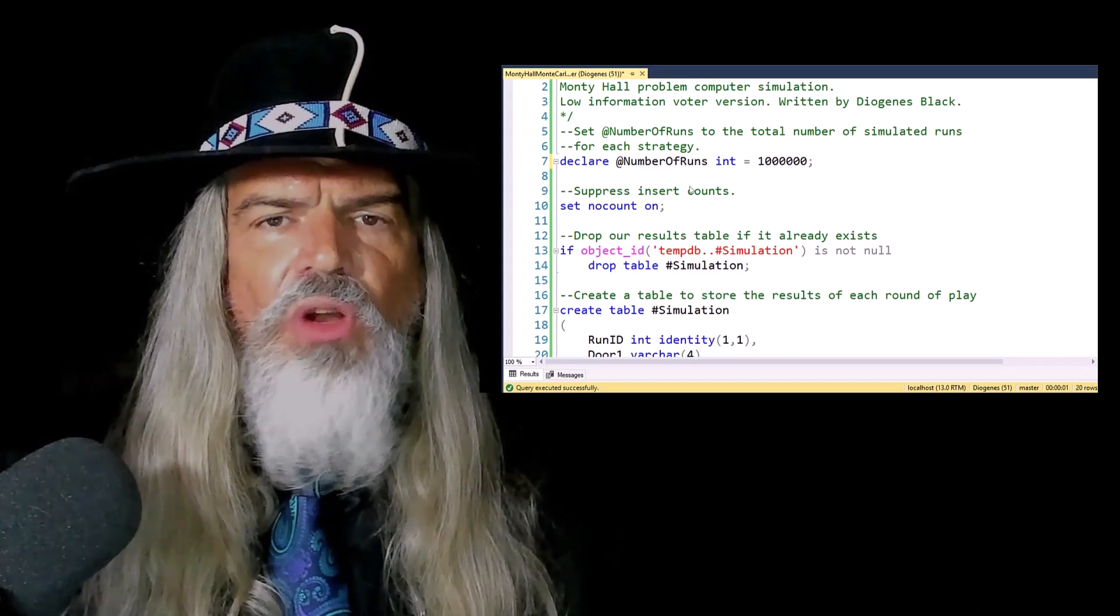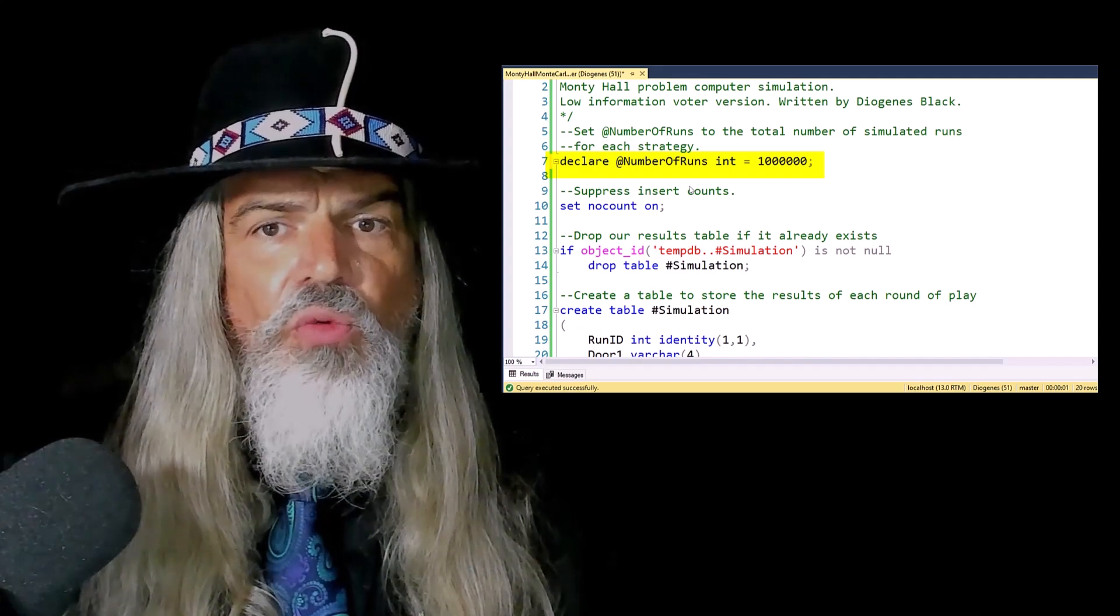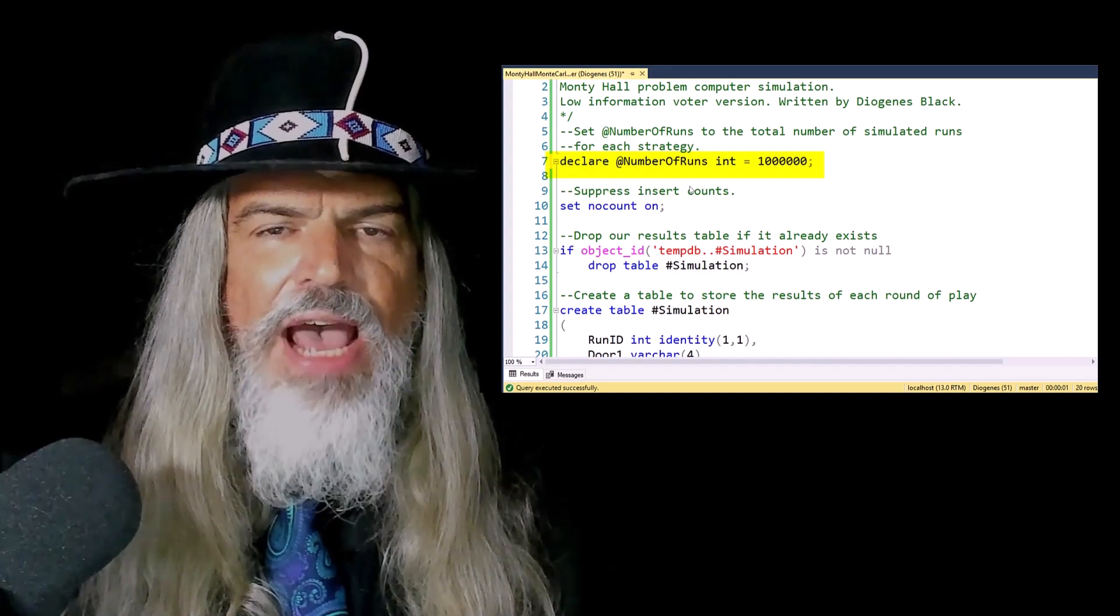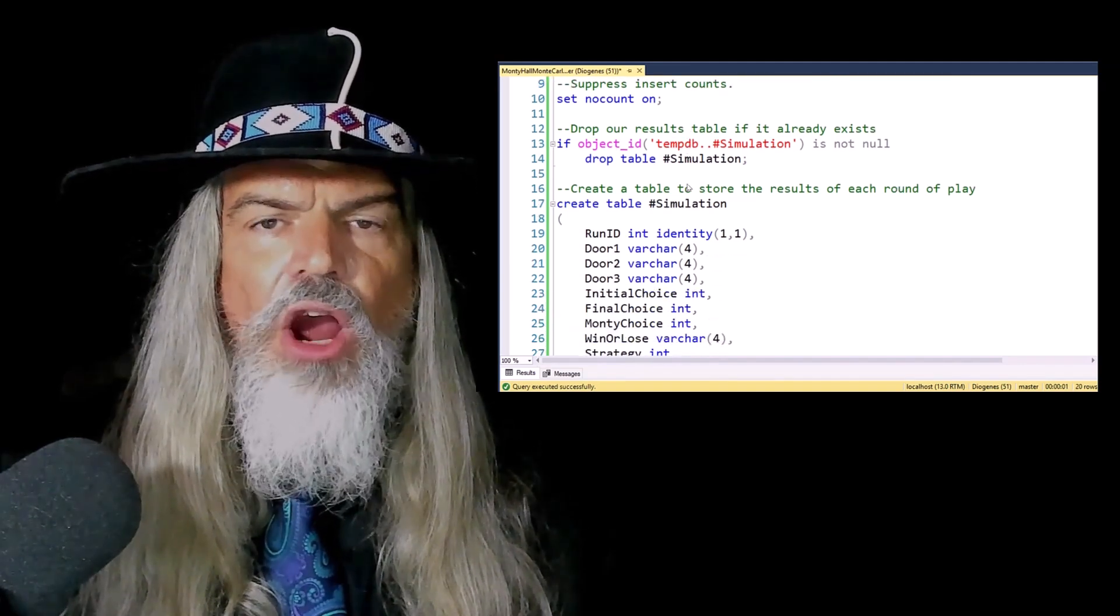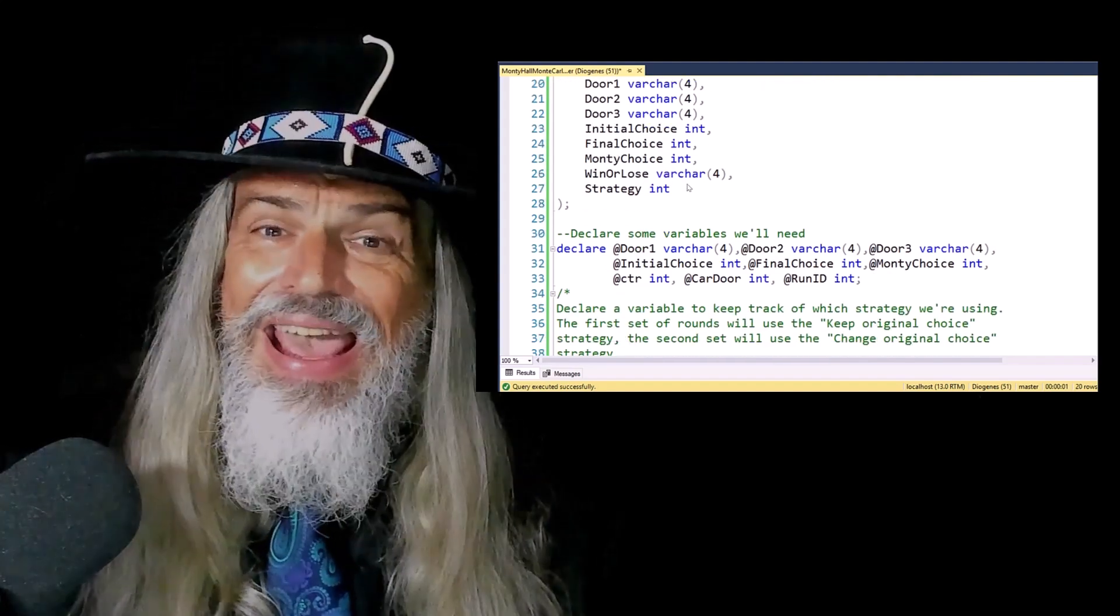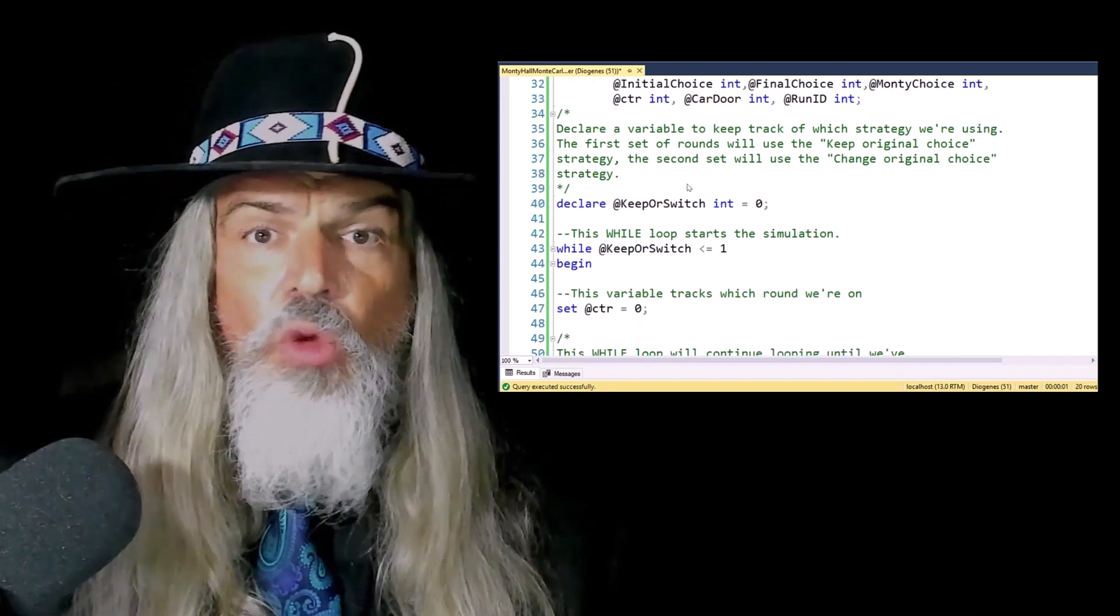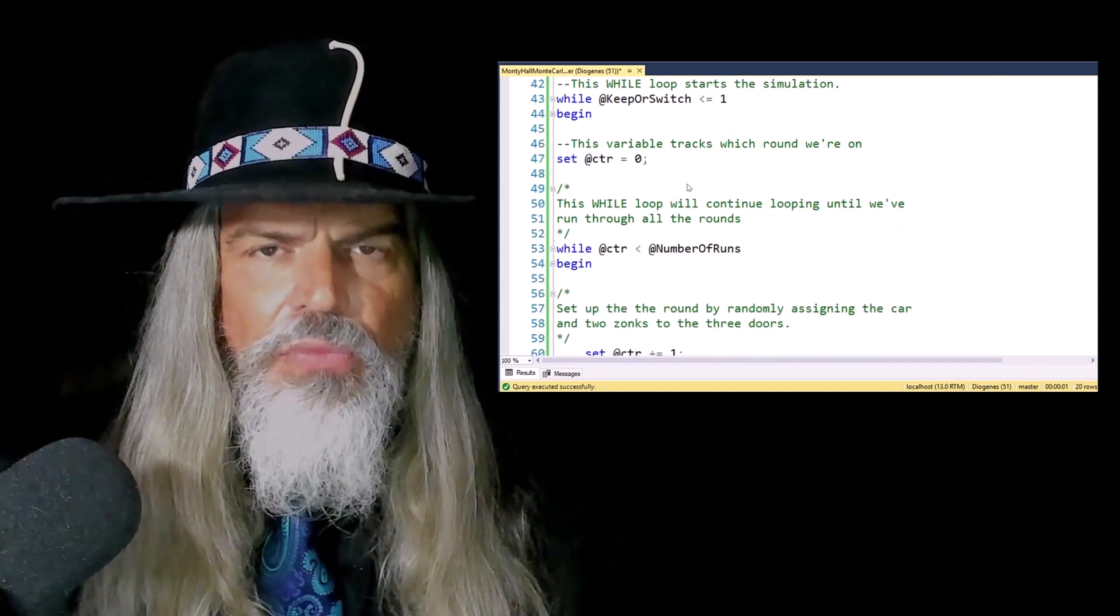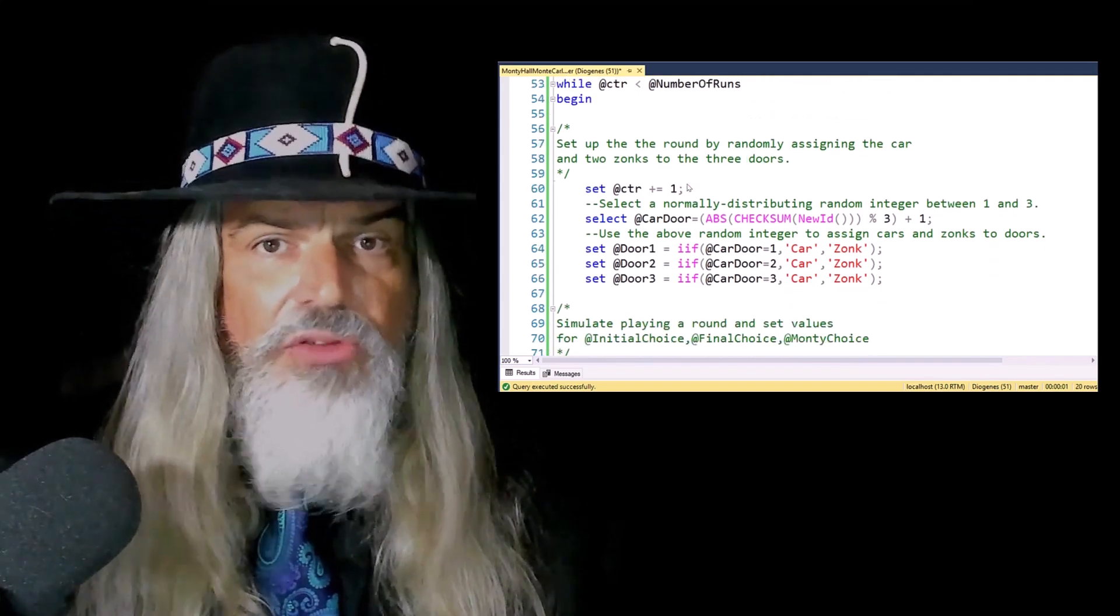Now what we're looking at here is the number of rounds or runs that we're going to implement. So what's going to happen is we're going to run one million rounds where we choose or keep rather the original door that we chose. And we're going to run another million rounds where we switch doors. We're going to store the results from each of those two million rounds in a data table. And then after we've run the two million rounds, we're going to sum up the data and see what happened.